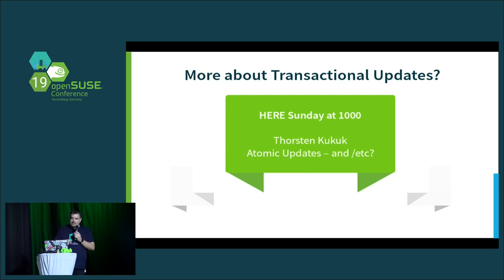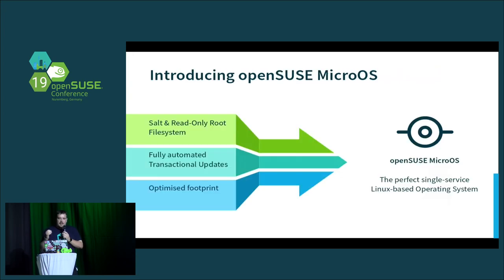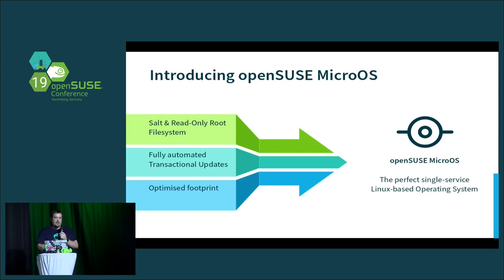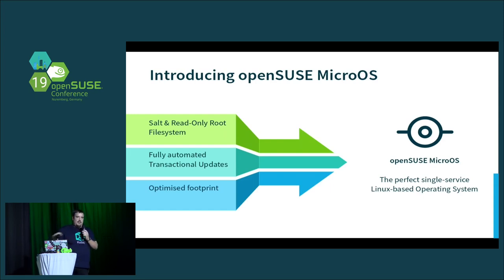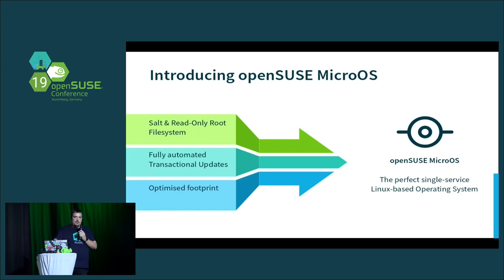With a combination of using Salt and a read-only root file system, we're doing our best to solve the configuration drift problem. The idea with MicroOS is minimizing what you can change on the system while using Salt so that when you do change it, it's standardized across all your machines. On top of that, we're using transactional updates and optimizing the footprint — not installing too much, not bundling a million files — so there are fewer things on the system to go wrong.